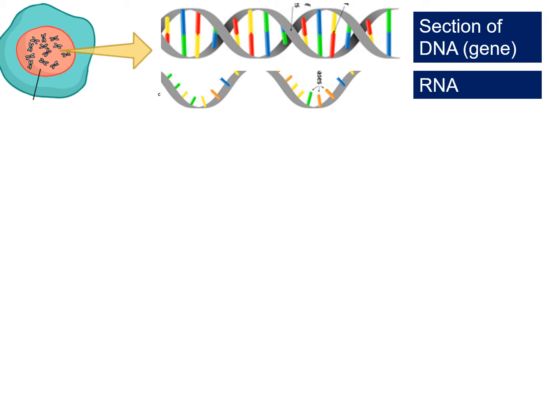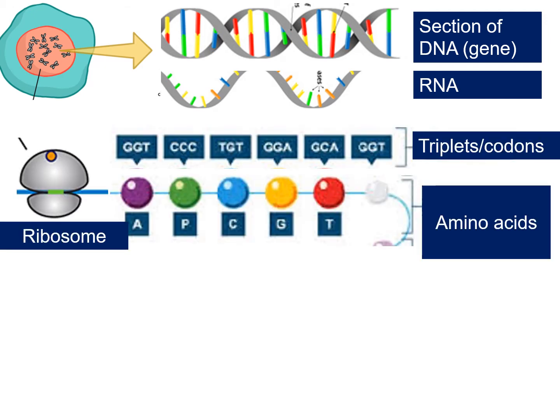The RNA then moves out of the nucleus and moves to an organelle or subcellular structure called a ribosome, which you should remember from year nine. The ribosome is where protein synthesis takes place. So if you're asked where protein synthesis takes place, you always say the ribosome, not the nucleus. This RNA attaches to the ribosome and the RNA is read a little bit like a book. Rather than reading the whole code in one go, the ribosome splits the code into three bases. We call each of those three bases a triplet or a codon.